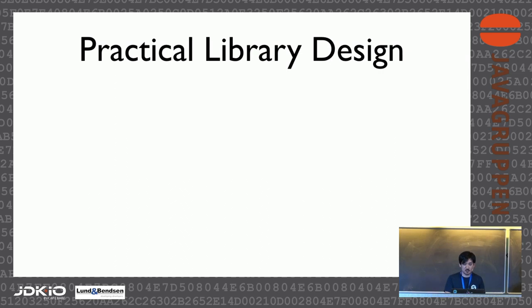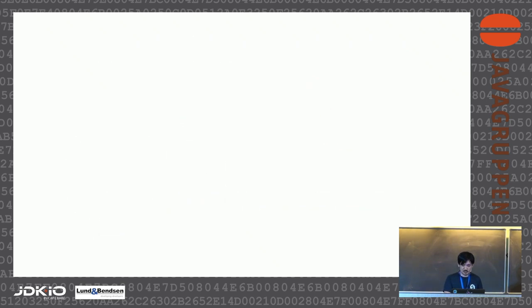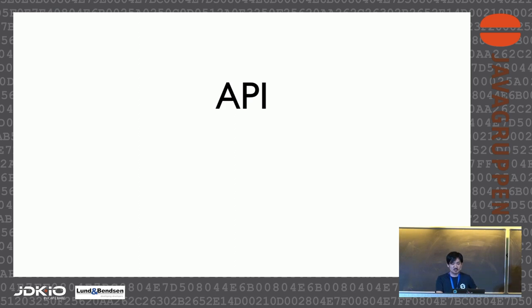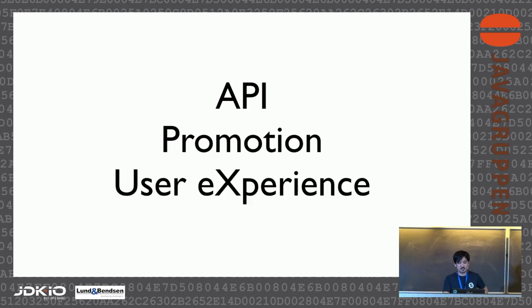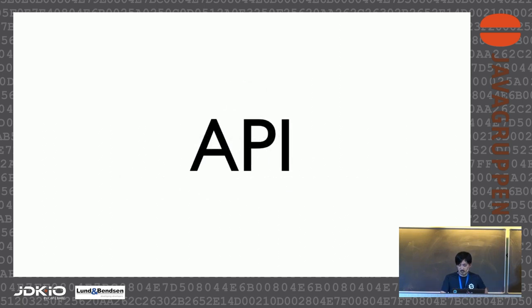Speaking of library design, what kind of design makes a library awesome? API comes first — API matters. Awesome libraries come with awesome APIs. But you should also be mindful of promotion and user experience to make libraries awesome. In this talk, I'm going to cover these three topics which made Twitter4j awesome, or which will make your libraries even more awesome. Let's start with API.